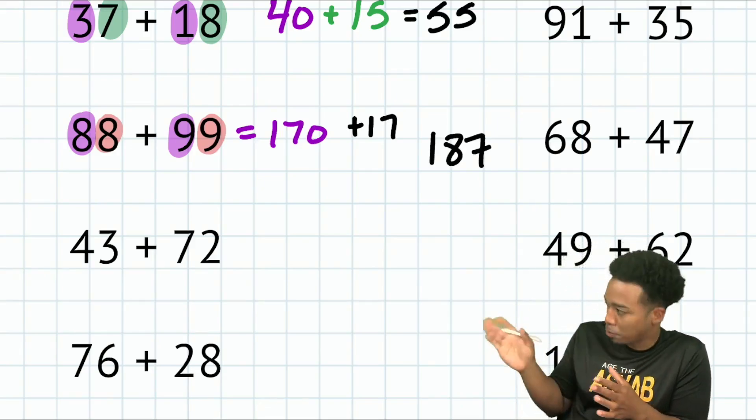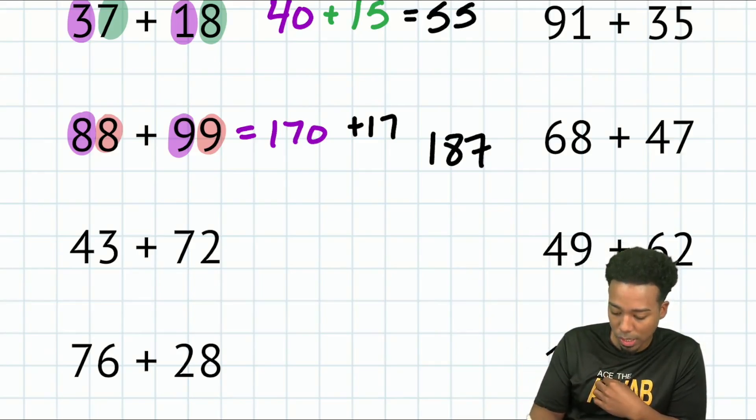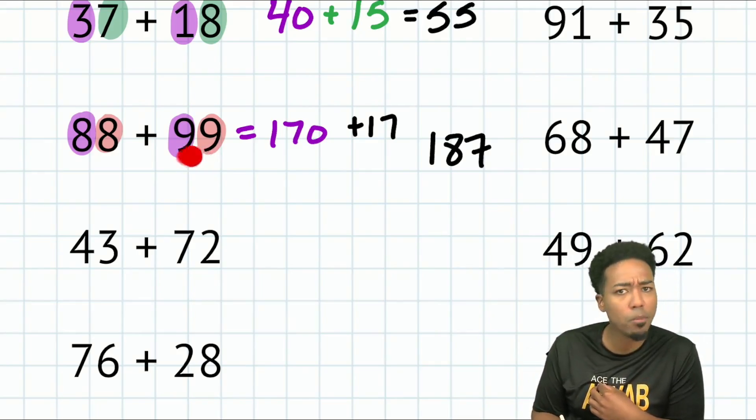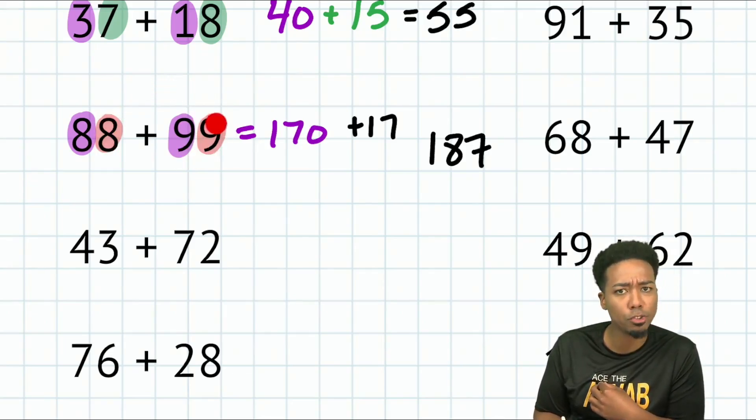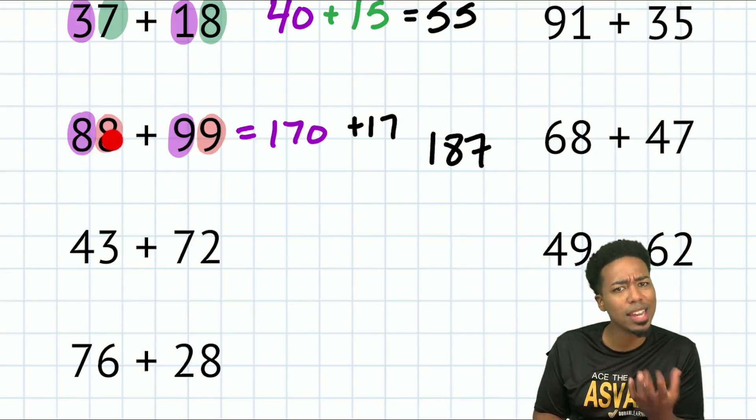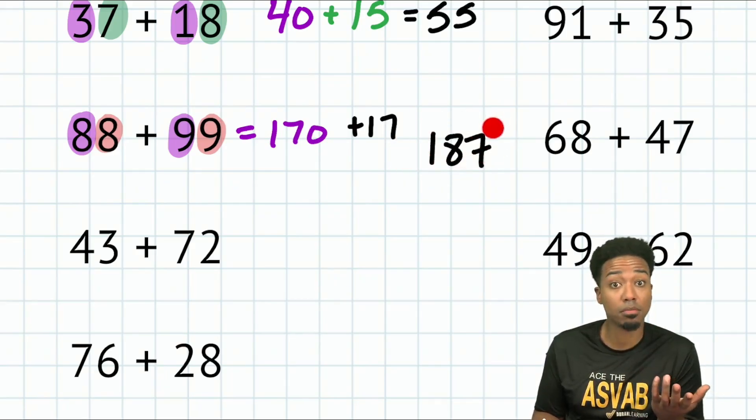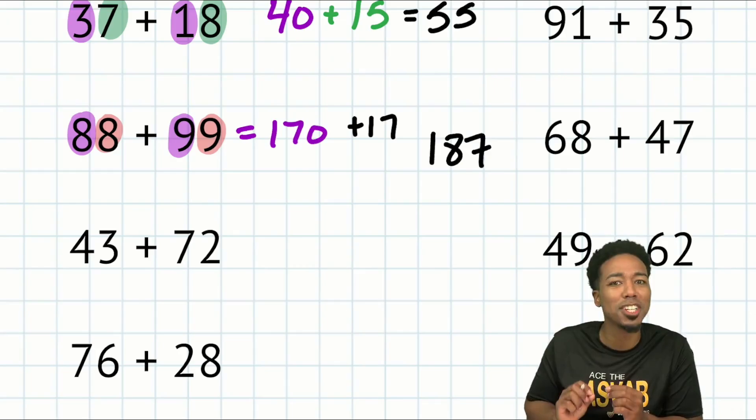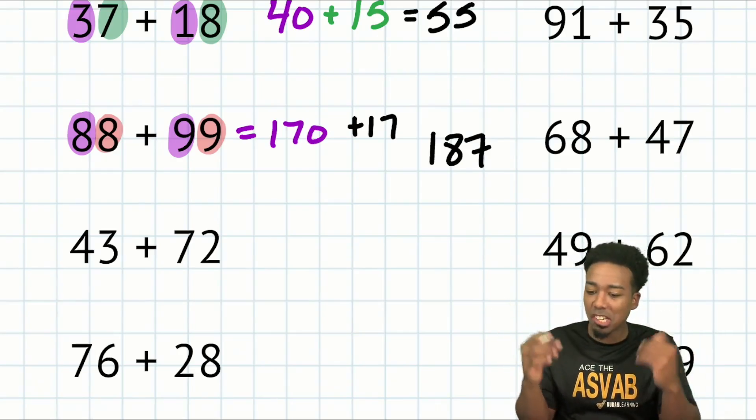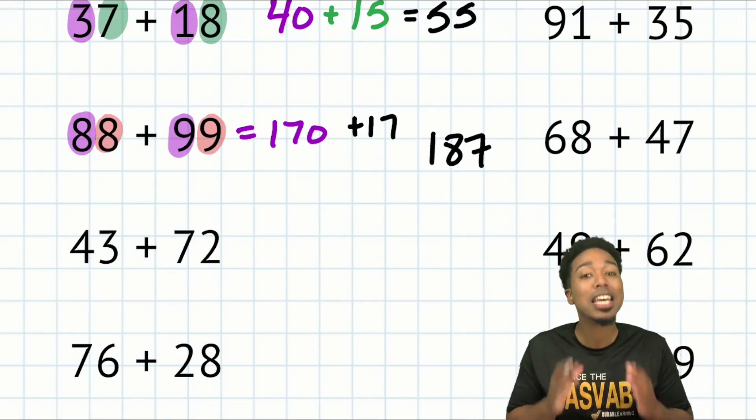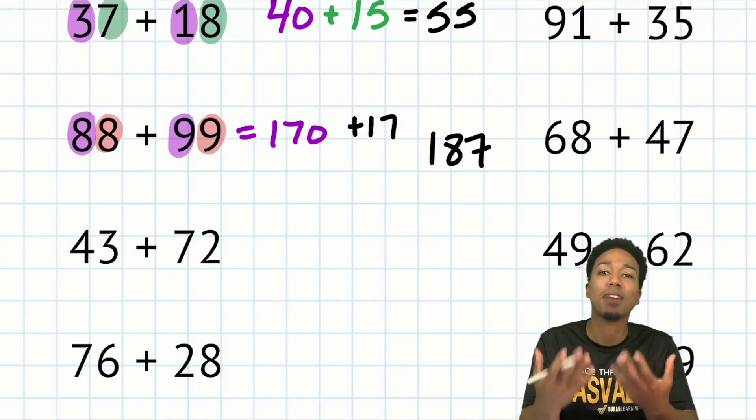A different strategy that you could have used for this particular one is, notice that you're one number away from 100. Let's take one from here and put it there. That's 100. Now, if I took one away, that's 87, 87 plus 100, 187. Look at that. Just using a little bit of logic to go ahead and break something down that looks complex into something much easier. That's what mental math provides you with.